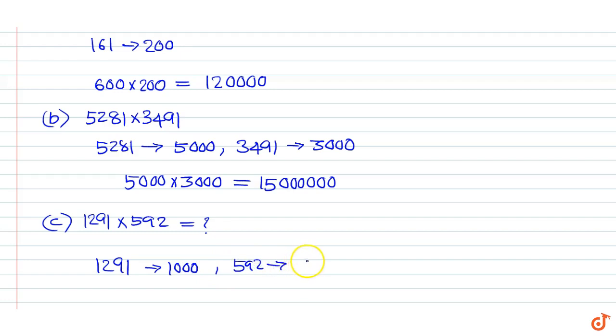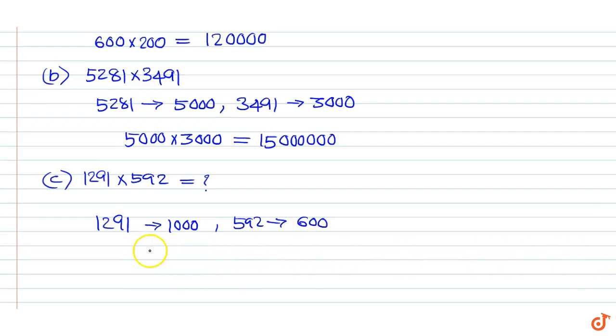So the product is 1000 x 600 which is equal to 600,000.